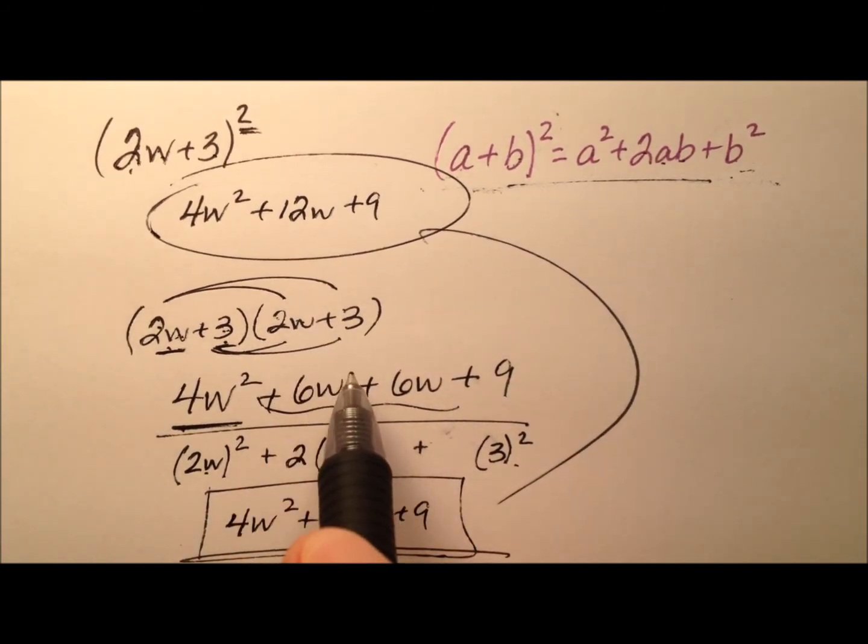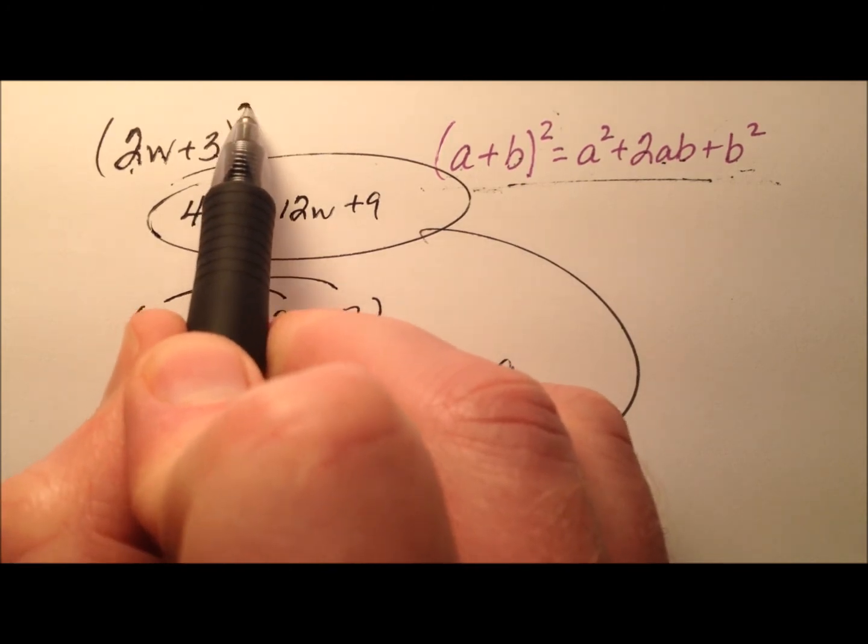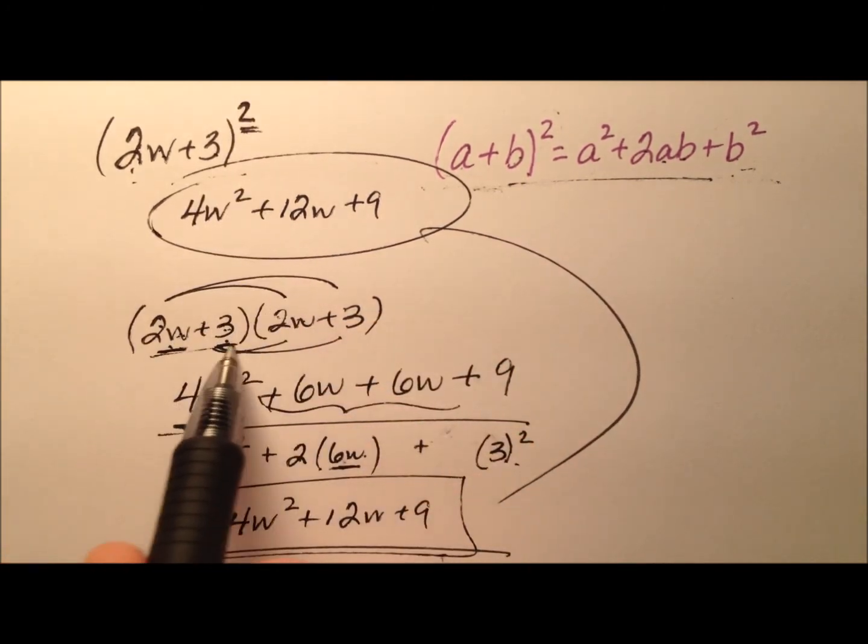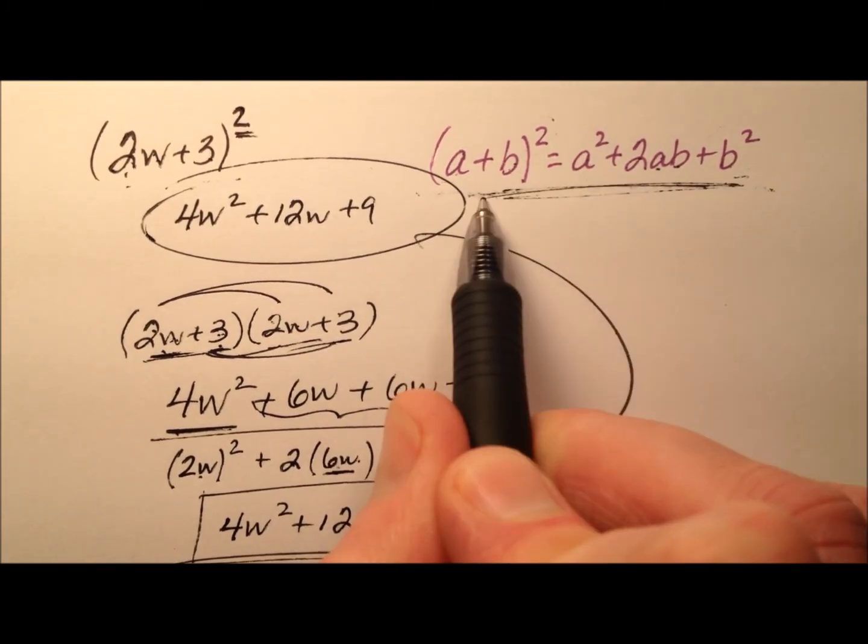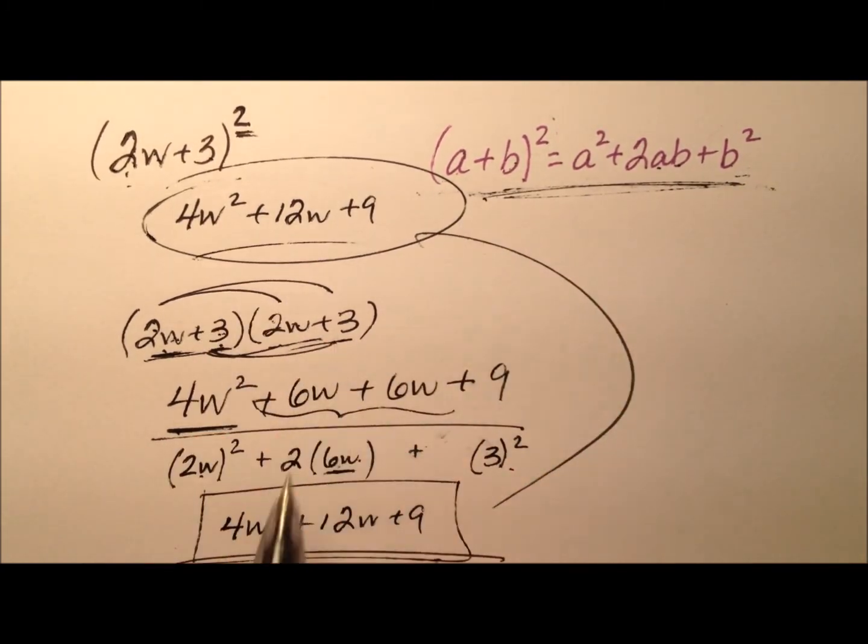So whichever one you're more comfortable with is perfectly fine. Since we're squaring this binomial, you can either put them side by side and multiply them out, or if you can remember this formula, and that's pretty easy to do as well, just go ahead and use that formula. Either way you'll get the same product.